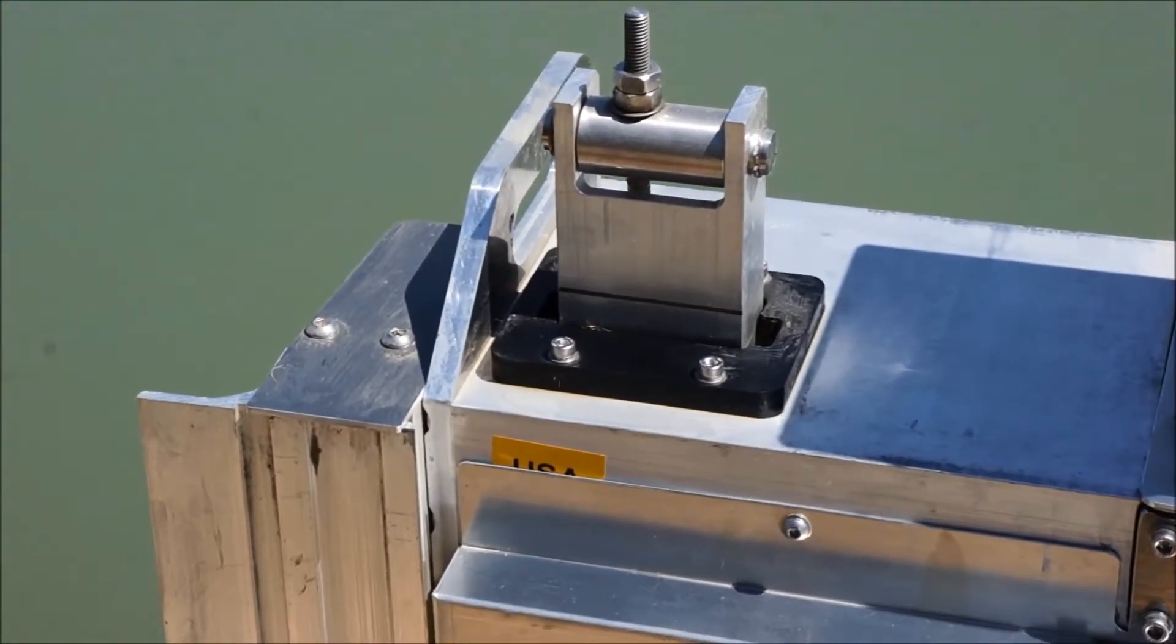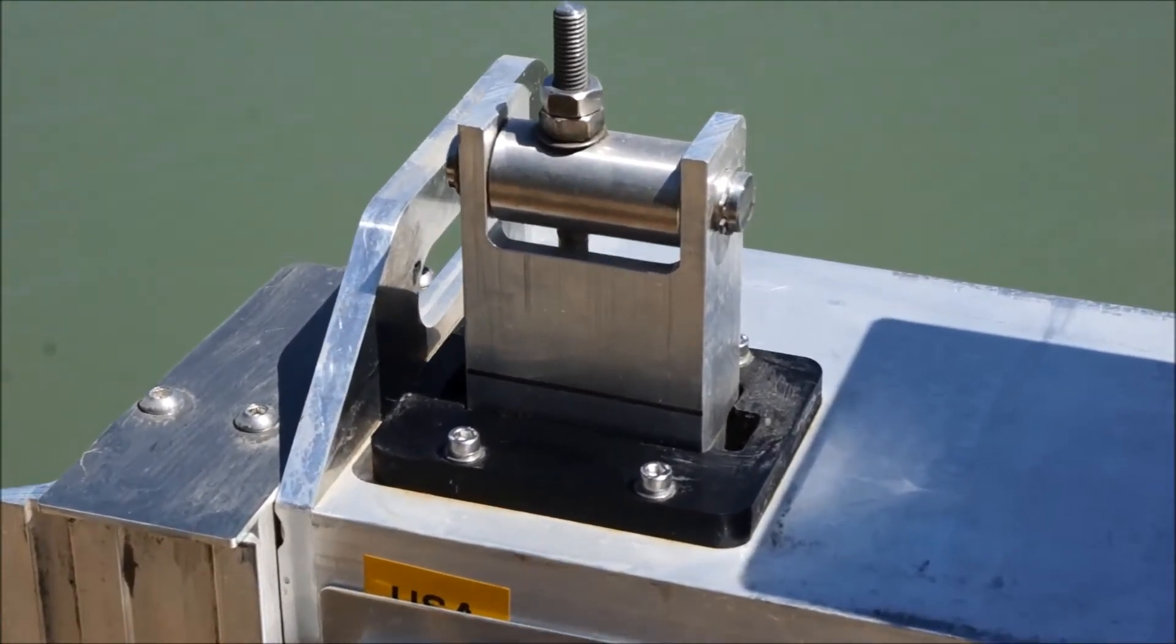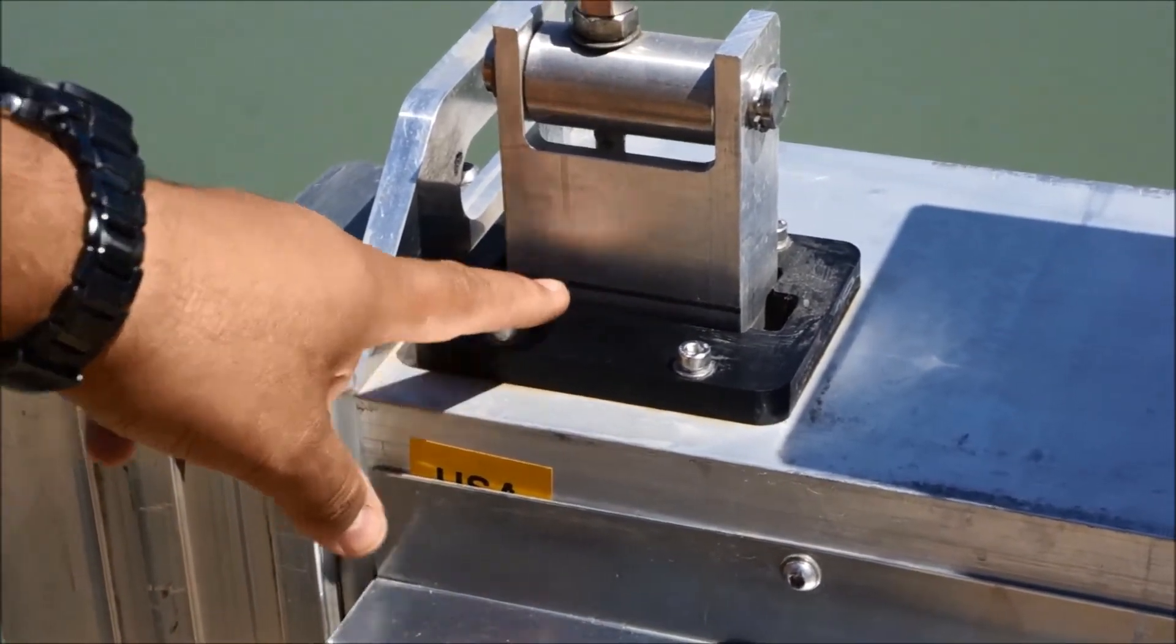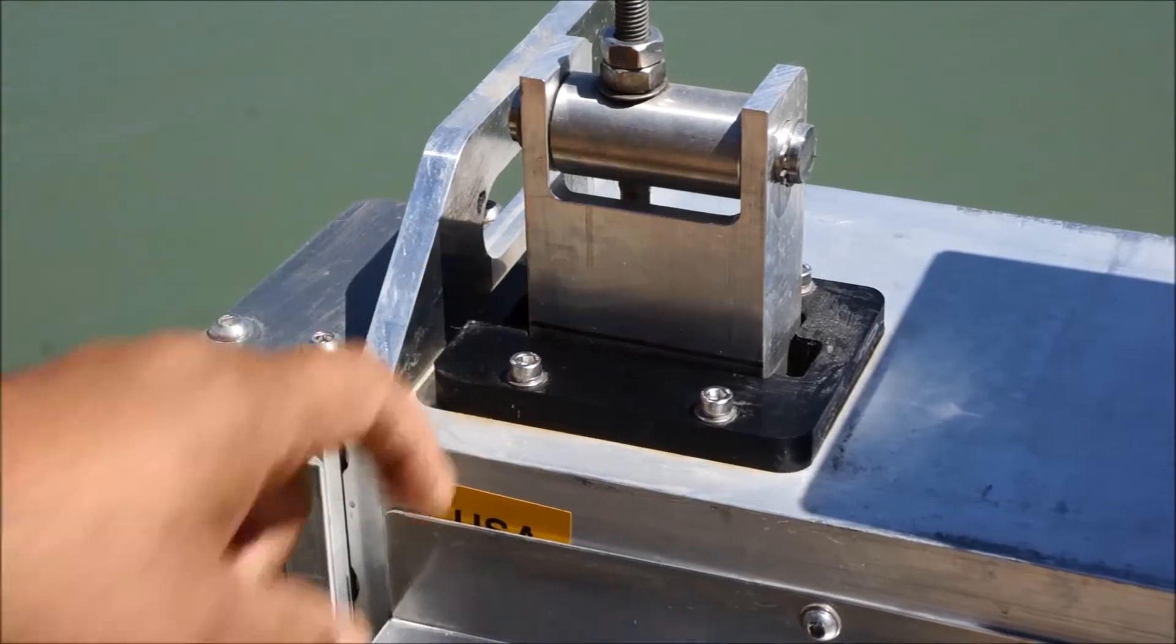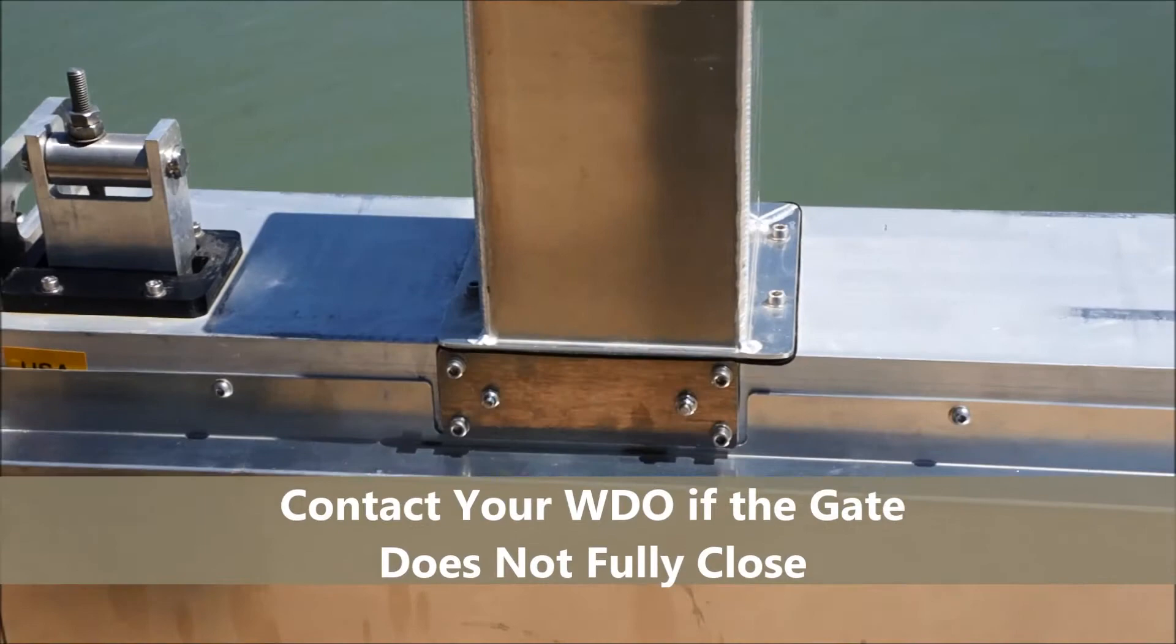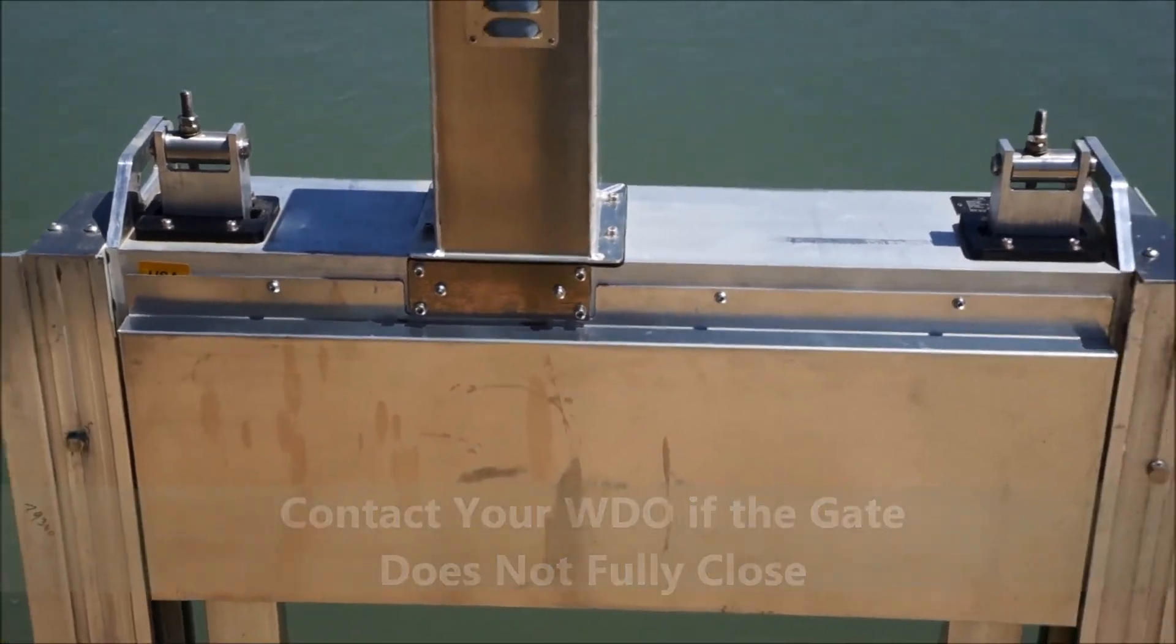The way you can confirm that the gate is closing is once it gets to the closed position, you'll notice your reference line again will meet the black block. So now that both lines meet, you can confirm the gate is closed and your irrigation is done.